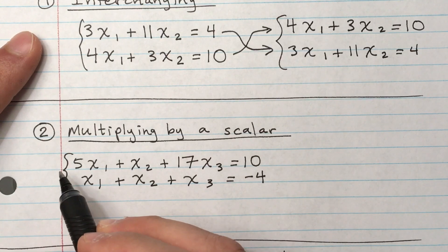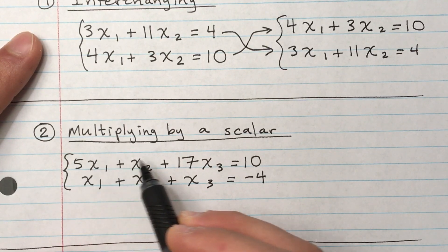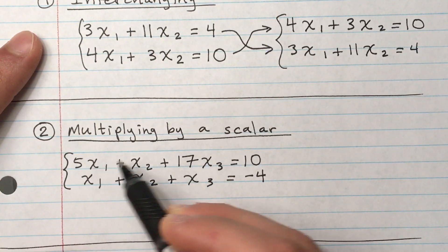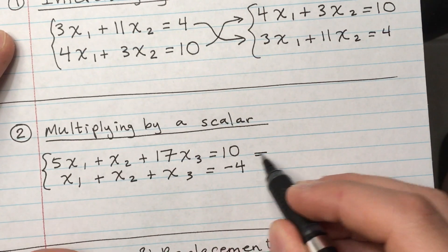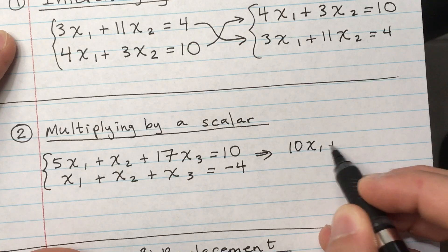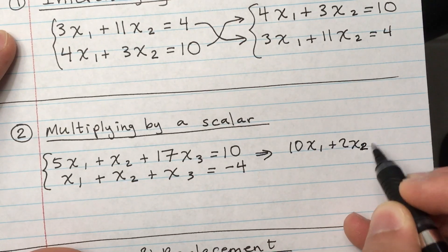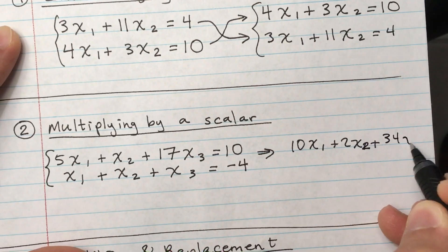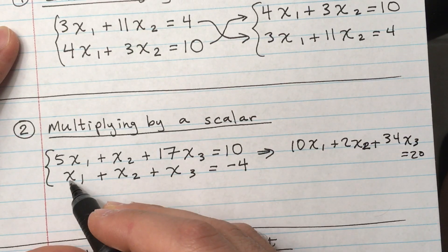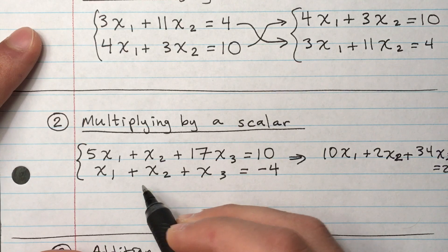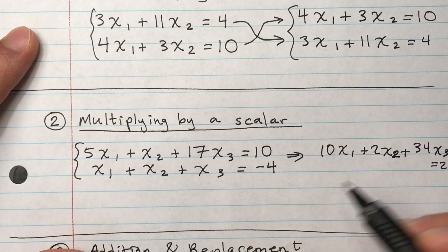So let's say I decide to just multiply the first equation in this system, just the first one by a number, a factor of 2, and then I rewrite it. Then I would get 10x₁ plus 2x₂ plus 34x₃ equals 20.